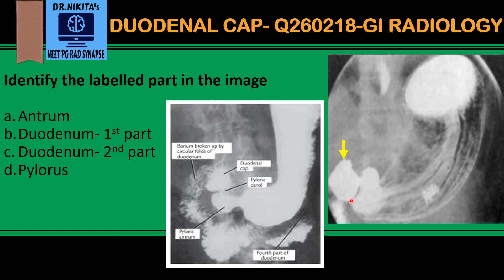This becomes the first part of the duodenum, which is triangle-shaped and smooth — that is called the duodenal cap. So that's the stomach, the antrum, the short pylorus, then the duodenal cap, which is the first part of the duodenum.